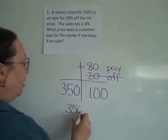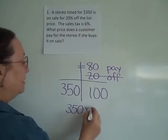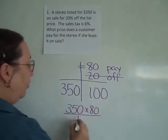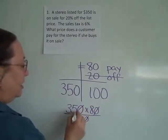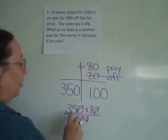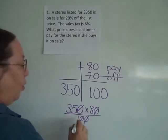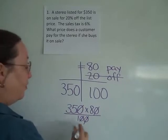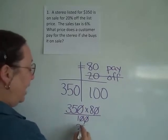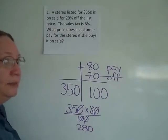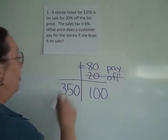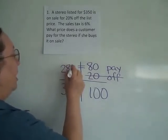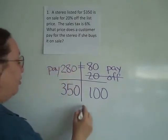This is a problem best done on a calculator. Take 350 times 80 and divide by 100, canceling zeros. 35 times 8, or about 70 times 4, gives 280, which becomes the sale price. So I'm paying $280.